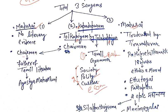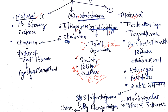The most important literature of the Third Sangam includes the Ettutogai, Pattupattu, Pathinenkilkanakku, and two epics: Silappadikaram and Manimekalai. Silappadikaram was written by Ilanko Adigal, who was the younger brother of the Chera king Senguttuvan. Manimekalai was written by Sittalai Sattanar. Pathinenkilkanakku is a set of 18 books written on ethics and morals.